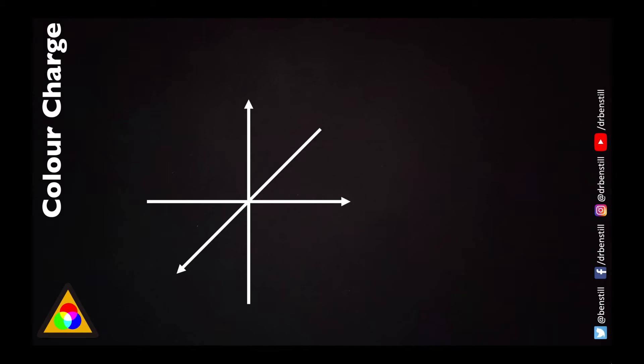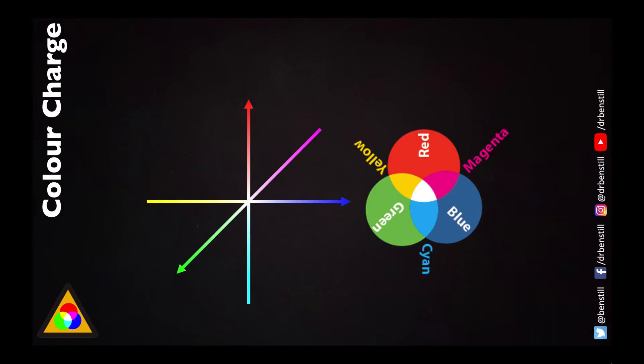We also mentioned in the colour charge video that the analogy of electric charge in terms of the strong force is that of colour charge, and the idea that quarks come in three primary colours of red, green and blue. When red, green and blue merge they form white light, which has no overall colour charge — white is the colour charge equivalent of colour neutral. If we start adding quarks together we can work out what combination will lead us to something which is colour neutral, and if it's colour neutral it's going to be lower in energy and so the most likely combination to form a particle.